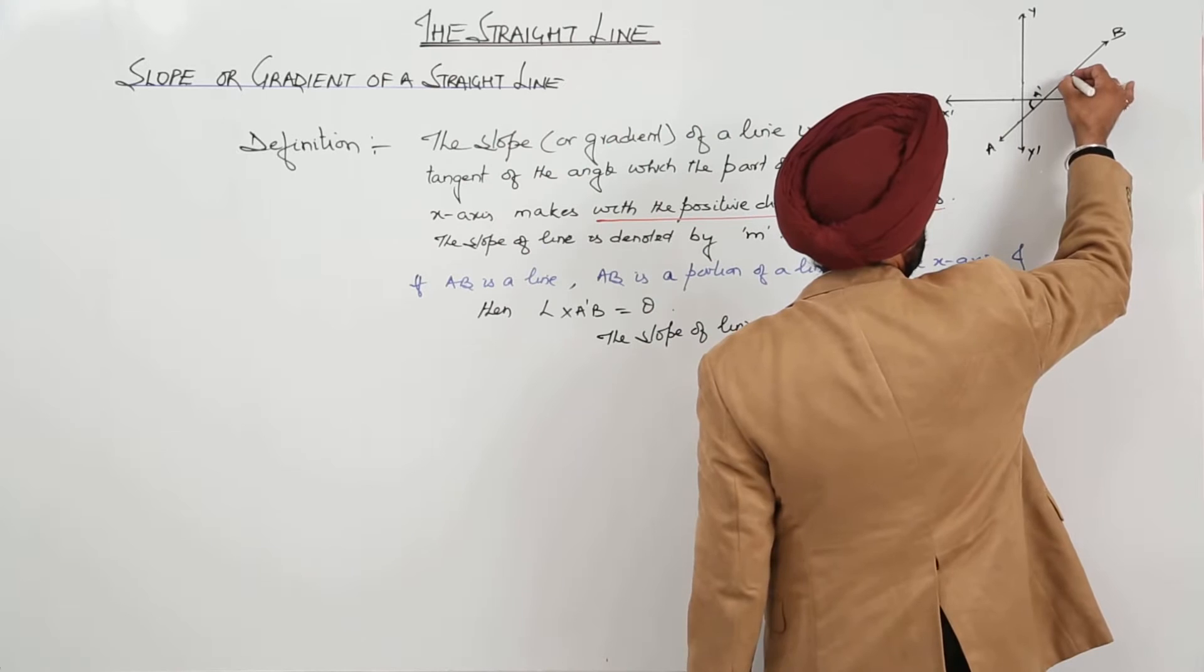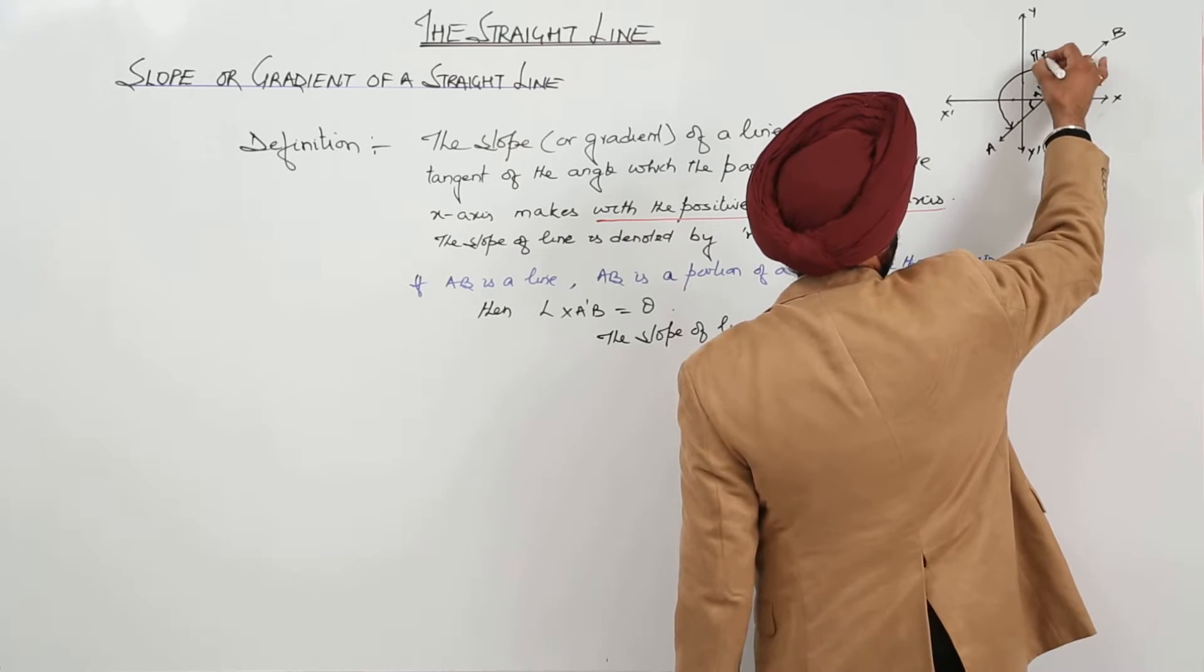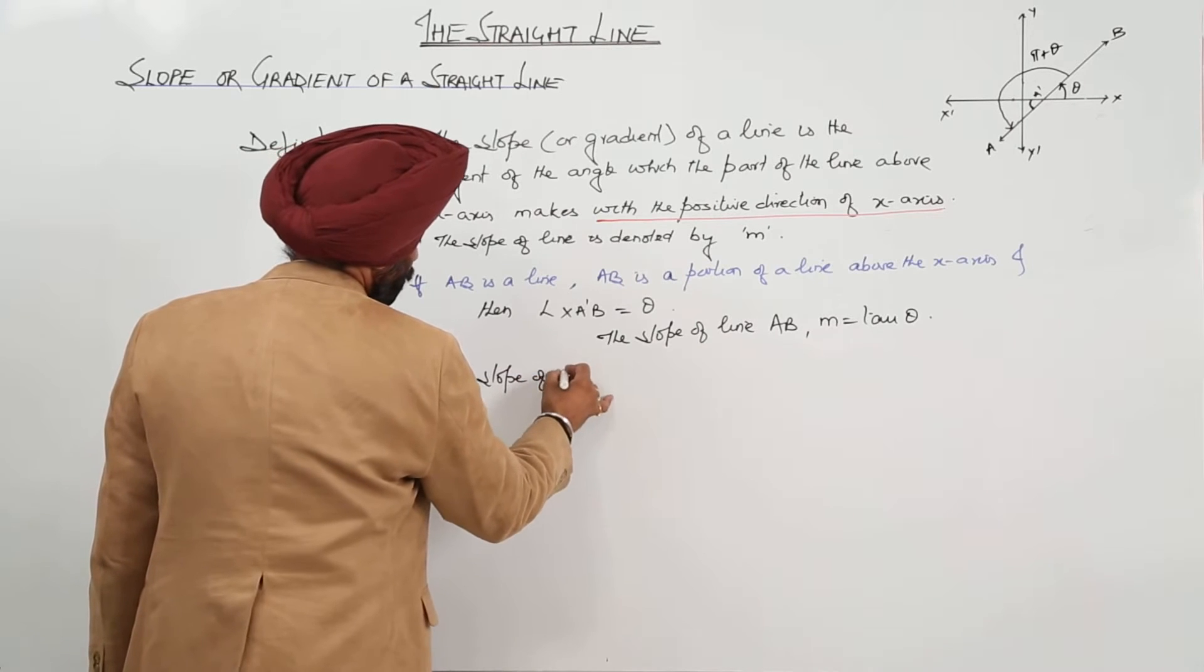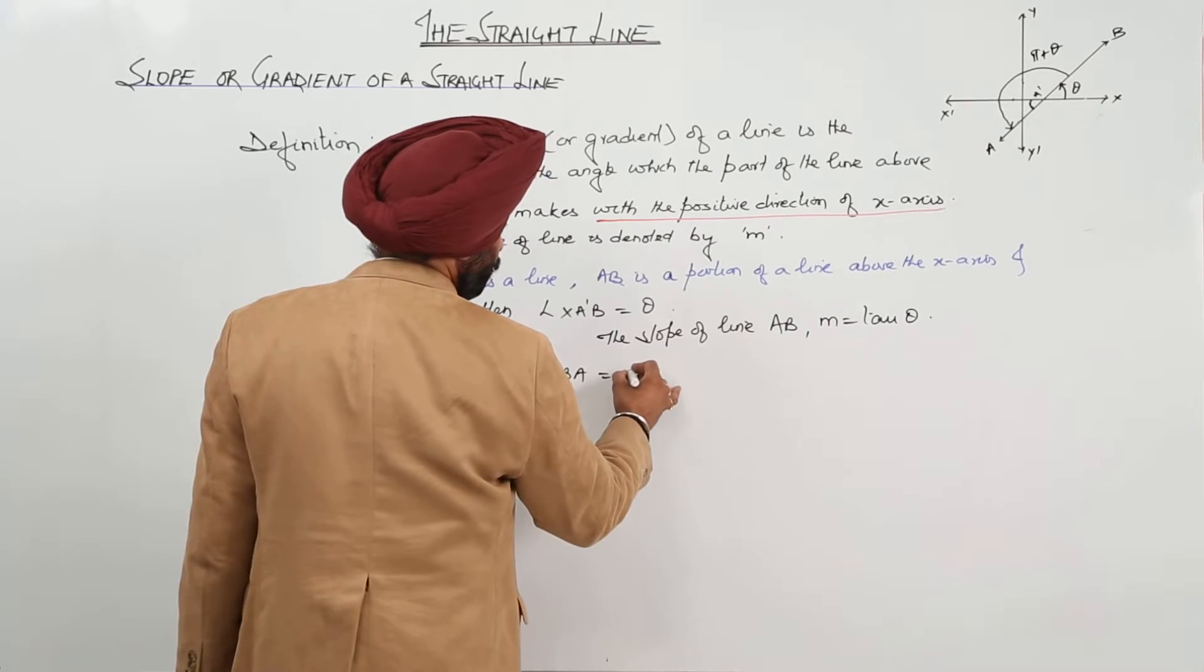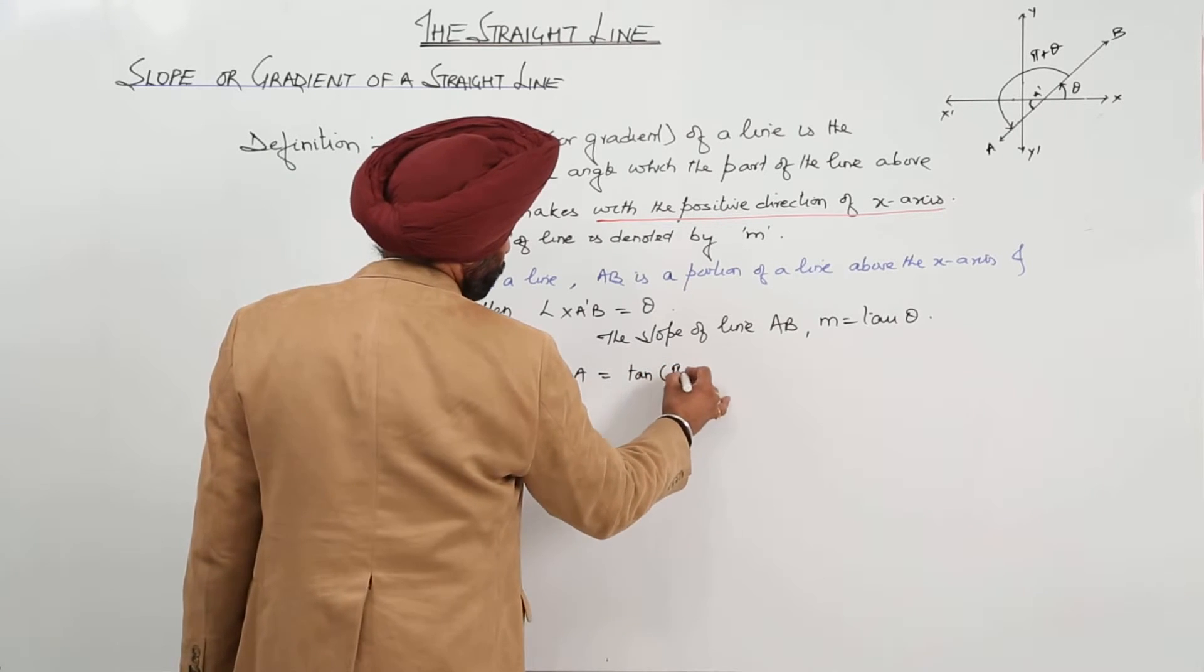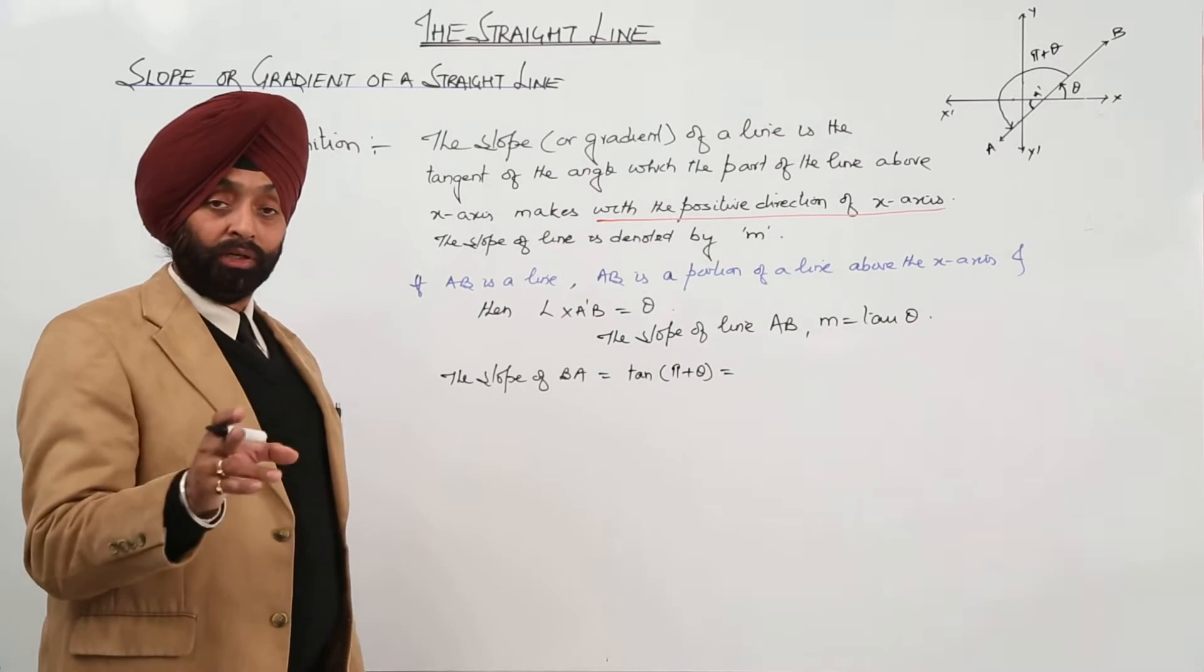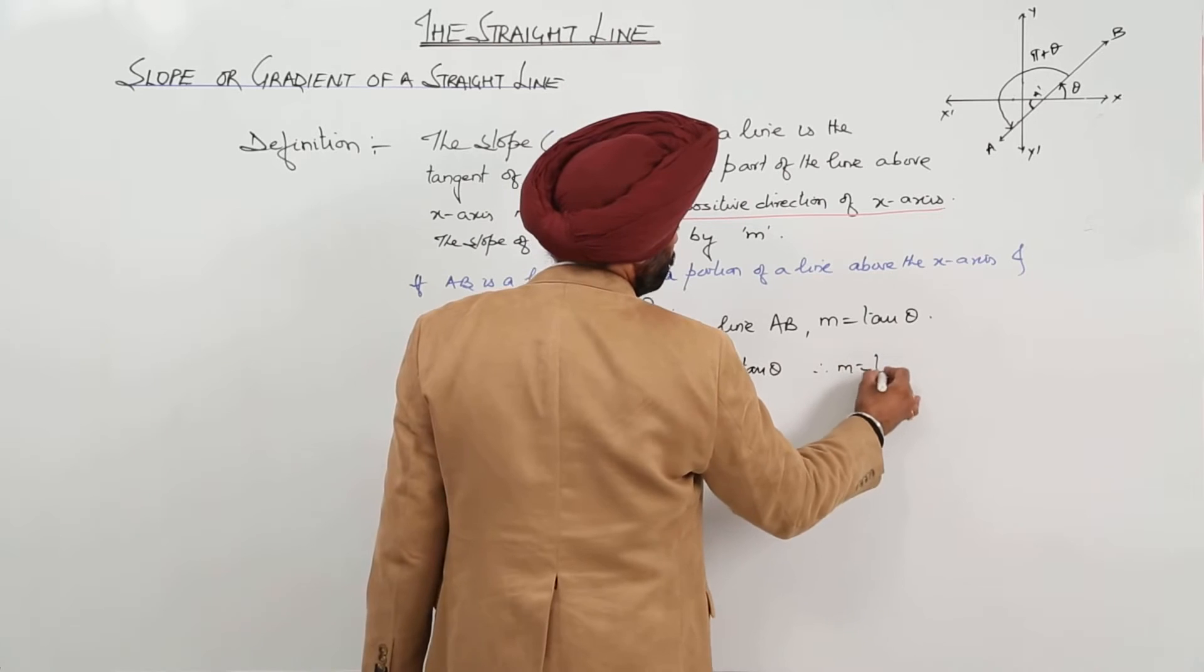So, from here to here, what is it? Pi plus theta. So, we can write it: the slope of BA is equal to tan pi plus theta. And pi plus theta, we have gone through the trigonometry. Pi plus theta means what? In the third quadrant, tan is positive. So, this becomes tan theta. Therefore, m is equal to tan theta.